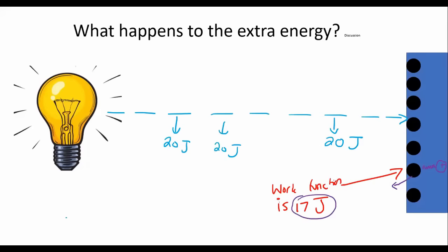So the extra 3 joules of energy, the extra 3 joules is going to be converted into kinetic energy. So electron will have 3 joules of kinetic energy.